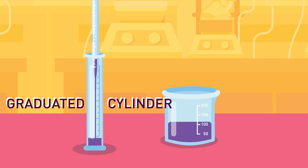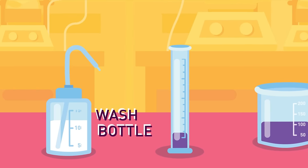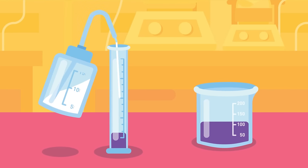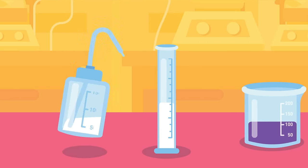Graduated Cylinder. Used to measure a precise volume of a liquid. Wash Bottle. Used to rinse pieces of glassware and to add small quantities of water.